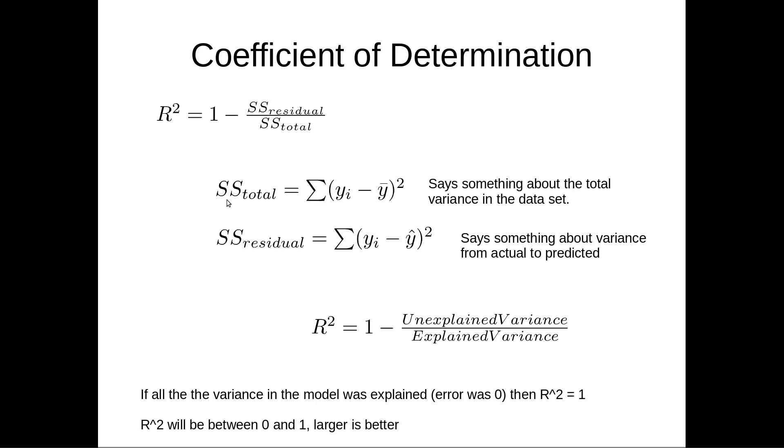So if we look at the sum of squares of the total, what that really is, is for each observation, take that observation, subtract the average value of the data set, square it, and take the sum. So this says something about the total variance in the data set. And really, this is pretty much the formula for variance, which you've probably calculated before.